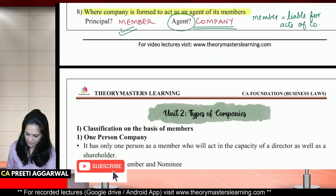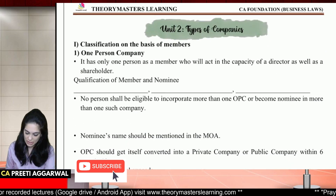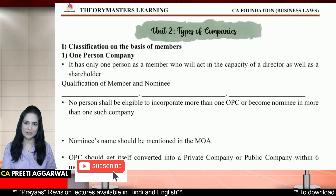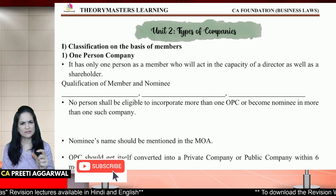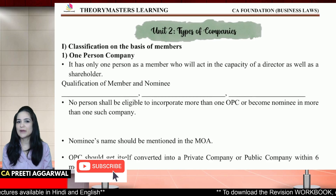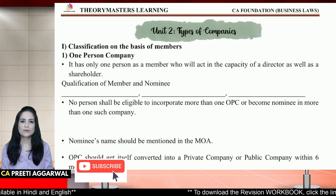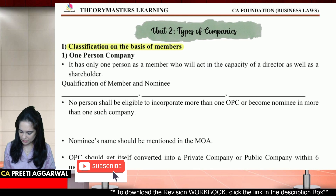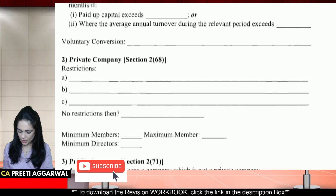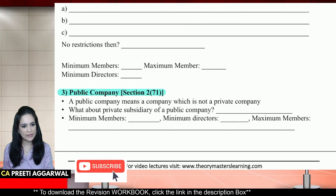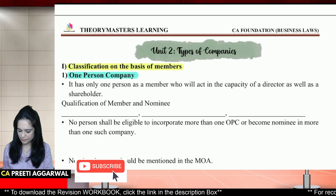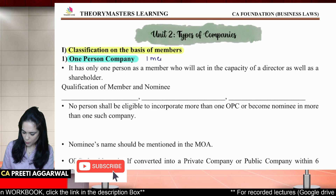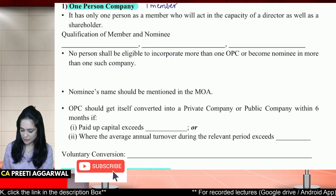With this we have come to an end on the introduction part. Next we will be studying what are the types of companies. Small theory questions will generally be asked; we can also ask you practical questions. Companies may be classified on the basis of members — it may be either a one person company, private company, or public company.